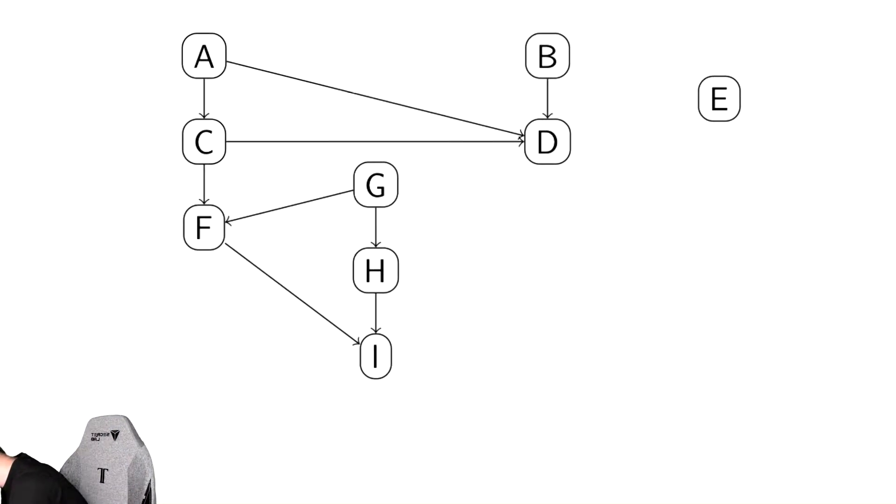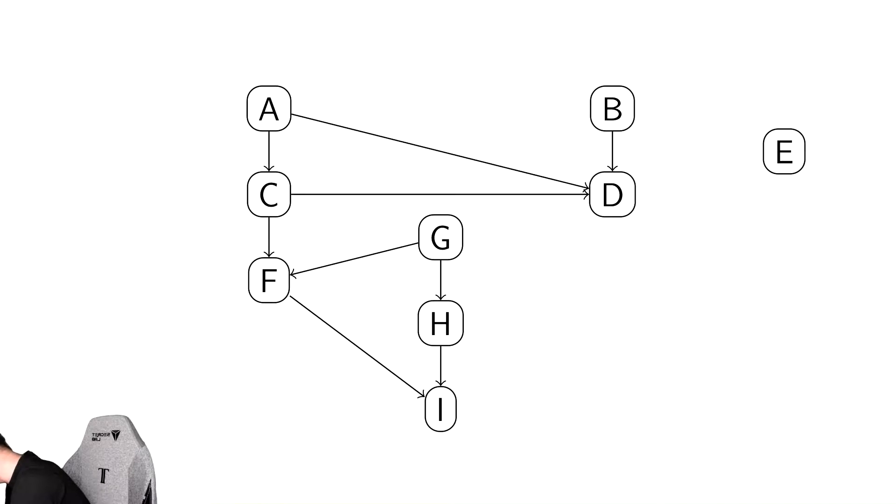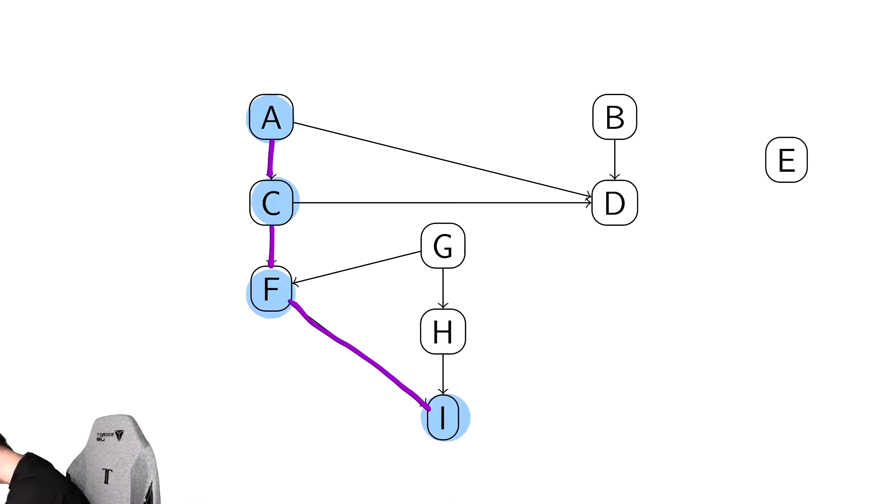Let's assume that we start at vertex A, and then, like we've always done before, we're going to proceed in numerical order. So we go from A to C, and then from C to F, and then from F to I, and let's color those in as we go. One, two, three.